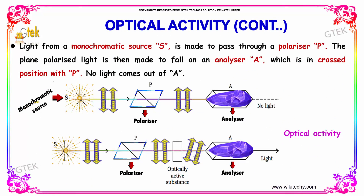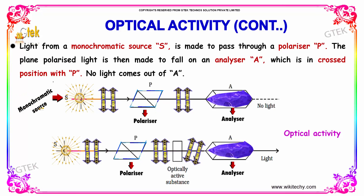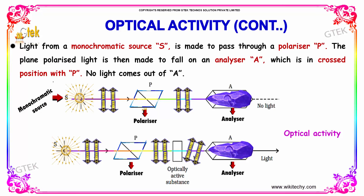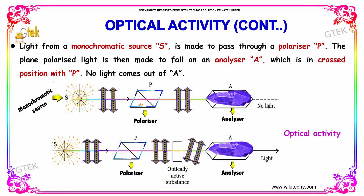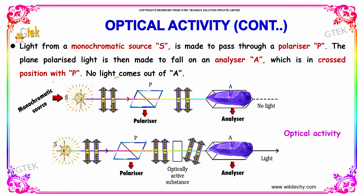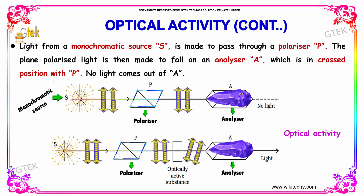Light from a monochromatic source is made to pass through a polarizer P. A plane polarized light is then made to fall on an analyzer A, which is in crossed position with P. No light comes out of A.